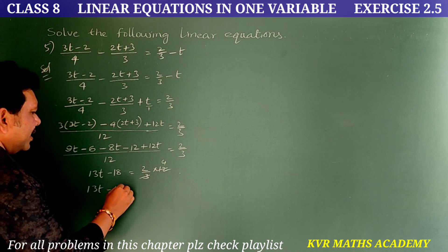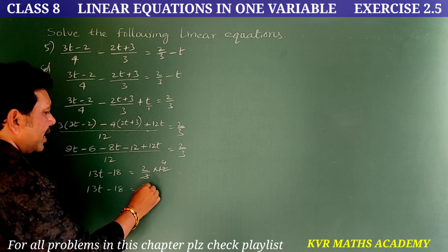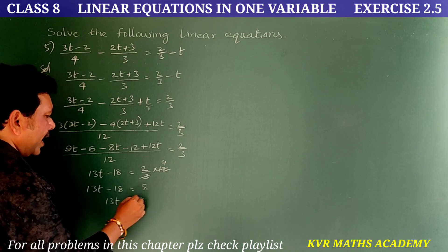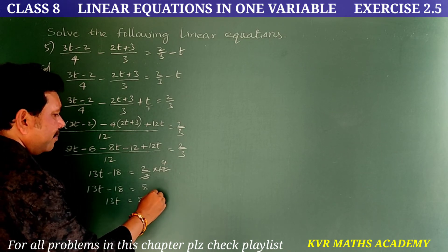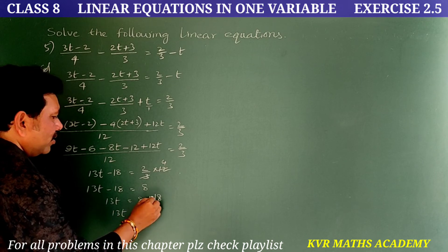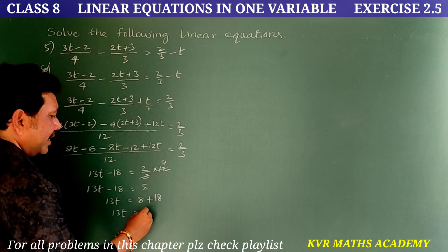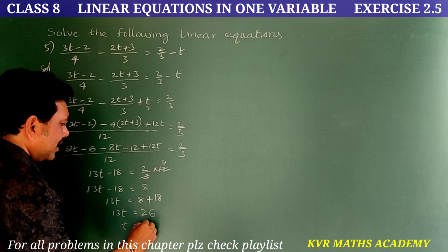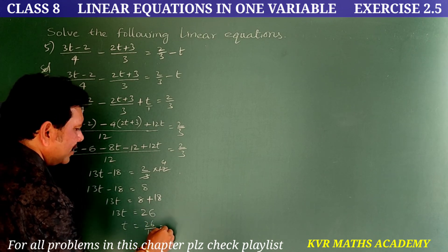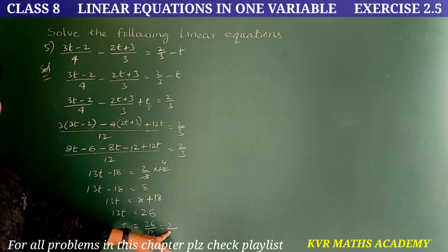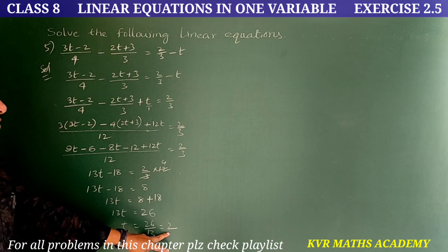Therefore 13t = 8 + 18 = 26. So t = 26/13 = 2. Thus t = 2.